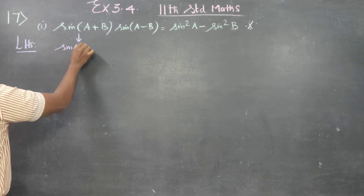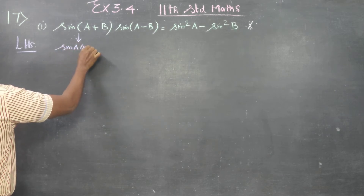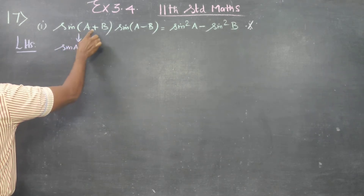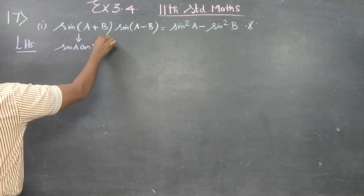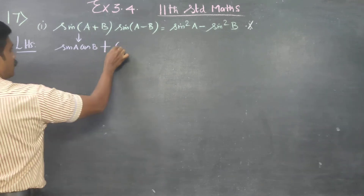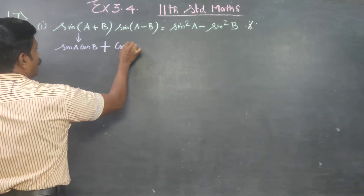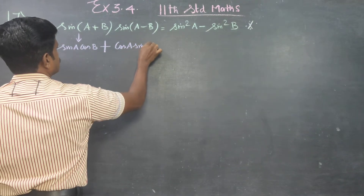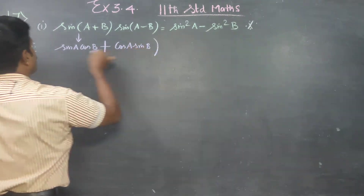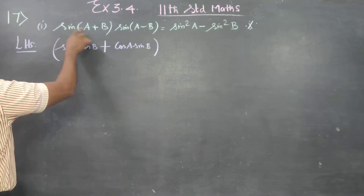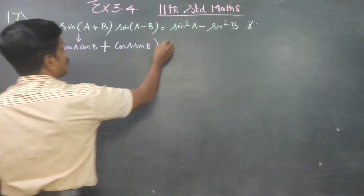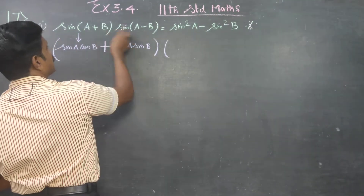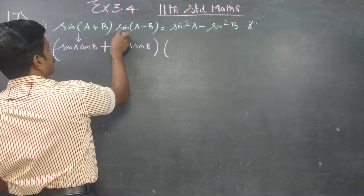Sin(A+B) equals sinA cosB plus cosA sinB. This is the compound angle formula for sin(A+B). Now what is sin(A−B)? Note this is multiplication.